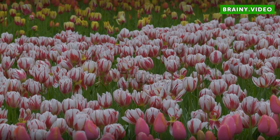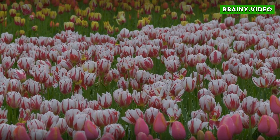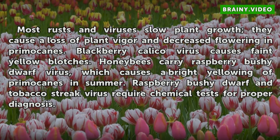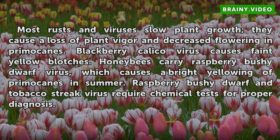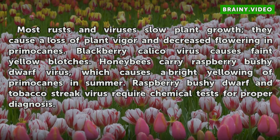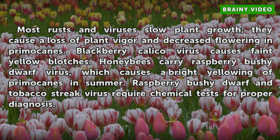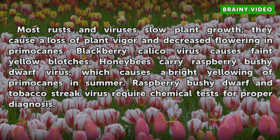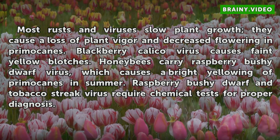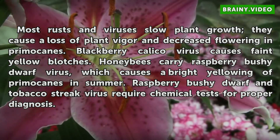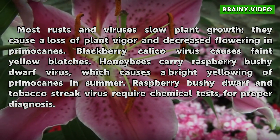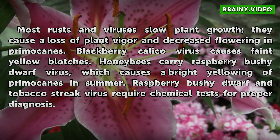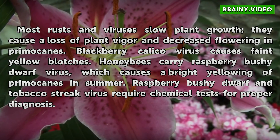Most rusts and viruses slow plant growth, causing a loss of plant vigor and decreased flowering in primocanes. Blackberry calico virus causes faint yellow blotches. Honey bees carry raspberry bushy dwarf virus, which causes a bright yellowing of primocanes in summer. Raspberry bushy dwarf and tobacco streak virus require chemical tests for proper diagnosis.